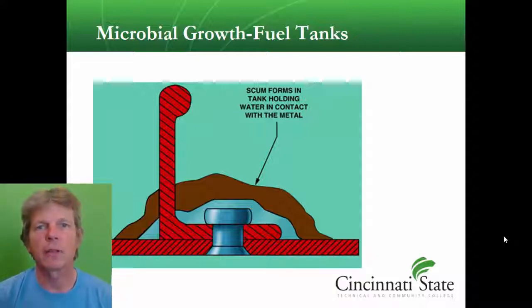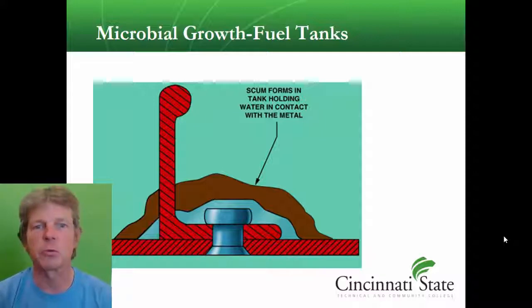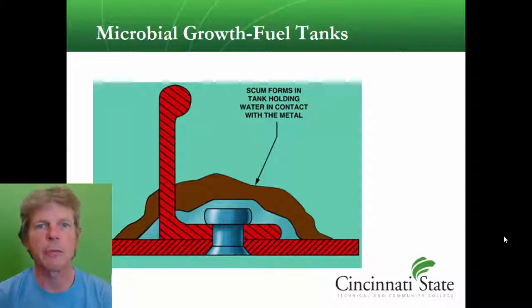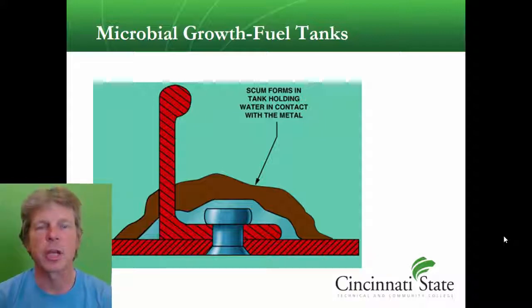Microbial growth — the scum of the fuel tanks. Inside things like Jet A fuel, there are microbes that form, and they also have a byproduct which forms water. This water contains oxygen, and there'll be a scum in the bottom of a jet aircraft fuel tank. Around this scum is an area where corrosion can grow.